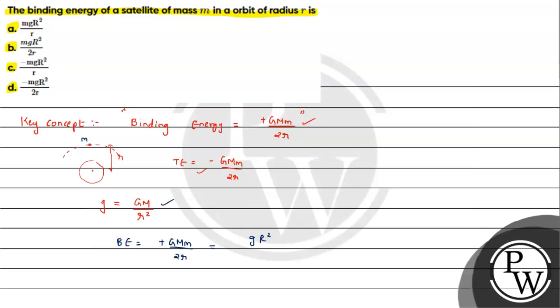g R² and the small m is here, divided by 2 into r. So here, the result clearly is coming out to be mg R² upon 2r. This is the answer to the question. I hope you understood the solution, all the best.